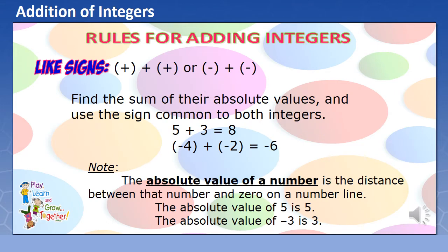Remember the rules for adding integers. For like signs - integers that are both positive or integers that are both negative - add their absolute values and use the sign common to both integers. Examples: Positive 5 plus positive 3 is positive 8. Negative 4 plus negative 2 is negative 6.